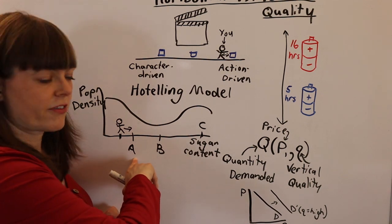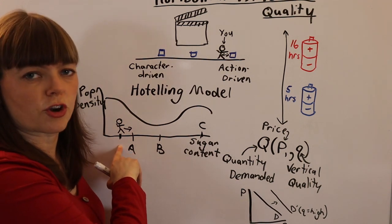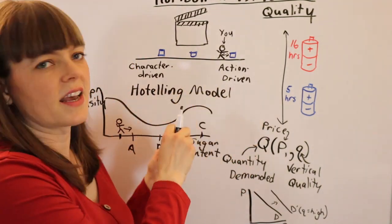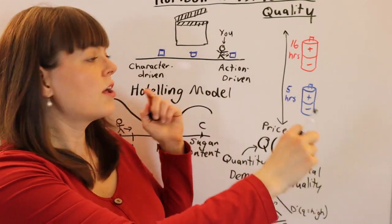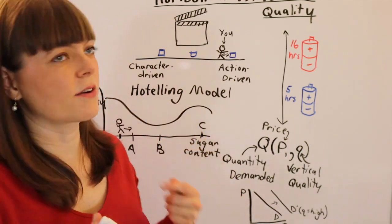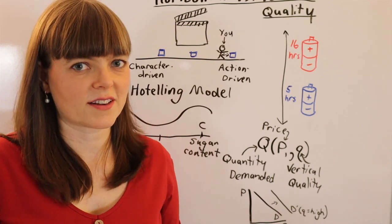Even though this tea is not perfectly matched to their optimal sugar preference. You can look more into the Hoteling model, but the basic idea is that it's a spatial model where people go to the nearest thing to themselves, and it relates to horizontal quality of products.